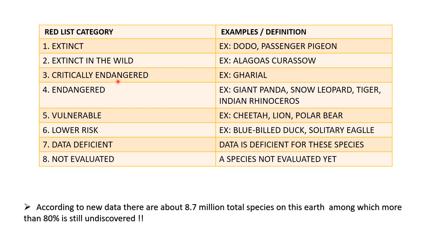Next one is Critically Endangered - uski condition bahut zyada critical hai, very near to danger. Critically endangered means when it is facing an extremely high risk of extinction in the wild in the immediate future - aane wale samay mein bahut zyada chances hain ki yeh extinct ho sakta hai. Example is ghariyal. Next is Endangered - jinka number bahut kam hai, but they too are at risk of extinction. Examples are giant panda, snow leopard, tiger, and Indian rhinoceros.